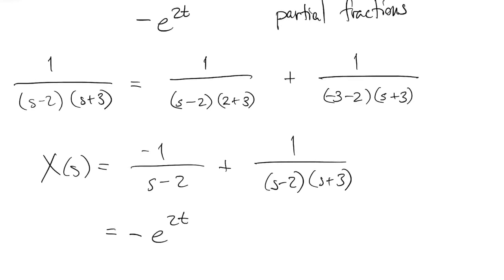So now, when I invert the transform, I had that first term already, and then I'm taking the inverse of one-fifth s minus 2. So that's one-fifth e to the 2t.